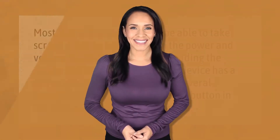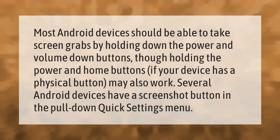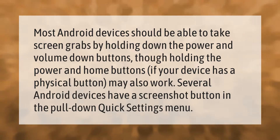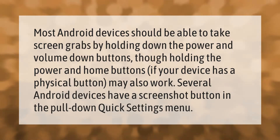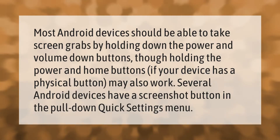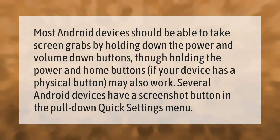Most Android devices should be able to take screen grabs by holding down the Power and Volume Down buttons. Holding the Power and Home buttons — if your device has a physical home button — may also work. Several Android devices have a screenshot button in the pull-down quick settings menu.